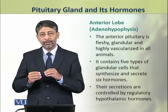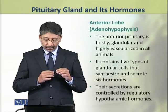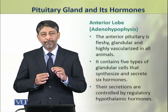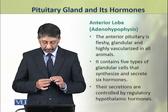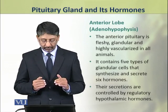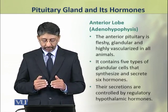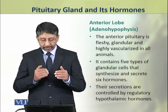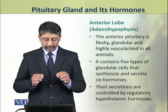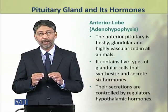The anterior lobe, or adenohypophysis, is fleshy, glandular and highly vascularized in all animals. It contains 5 types of cells which are glandular and synthesize and secrete 6 hormones. Their secretions are controlled by the hypothalamic hormones.